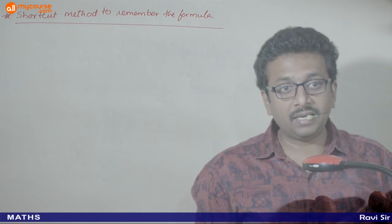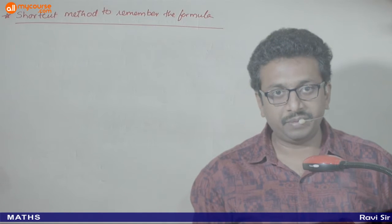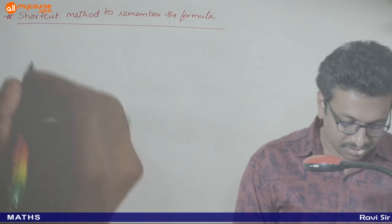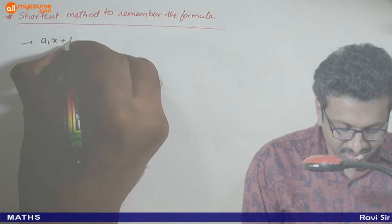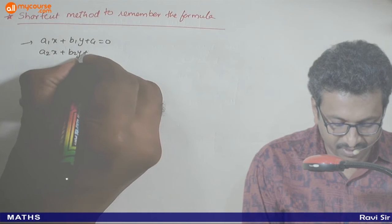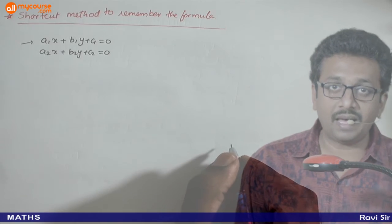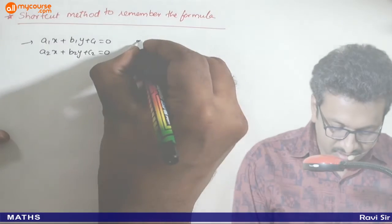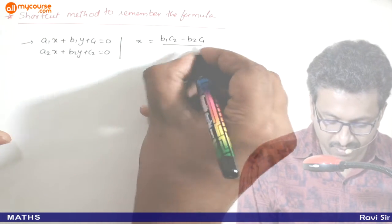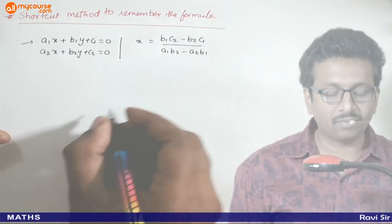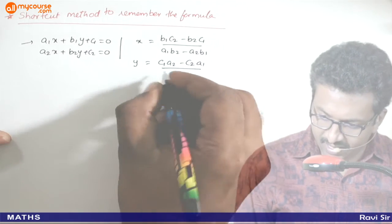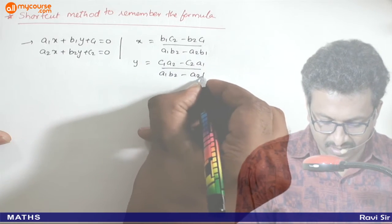Now let us try to understand the shortcut method to remember the formula that we have derived. x or y ka formula haam already derived kar chuk hai. Agar aapke paas do linear equations hai — a1x + b1y + c1 = 0 and a2x + b2y + c2 = 0 — the answer for x is (b1c2 - b2c1) / (a1b2 - a2b1) and y is (c1a2 - c2a1) / (a1b2 - a2b1).